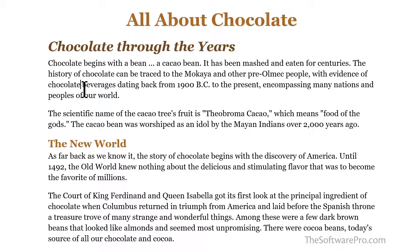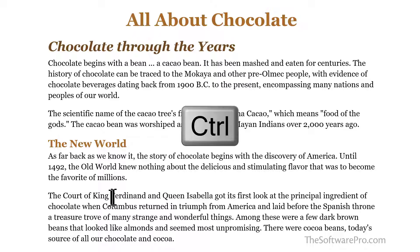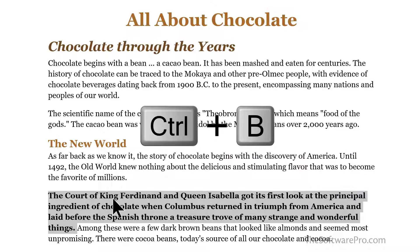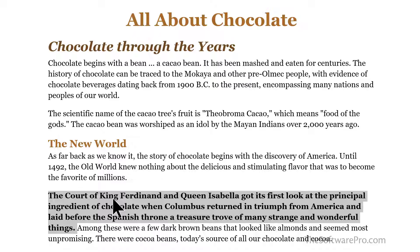Instead, you may want to select a sentence, not necessarily an entire paragraph. And we don't have to drag our mouse over it. Simply hold down Ctrl and click into the sentence, and the entire sentence including the punctuation is selected. Then perform any action you want. For example, to make it bold, press Ctrl+B — and it's that easy.